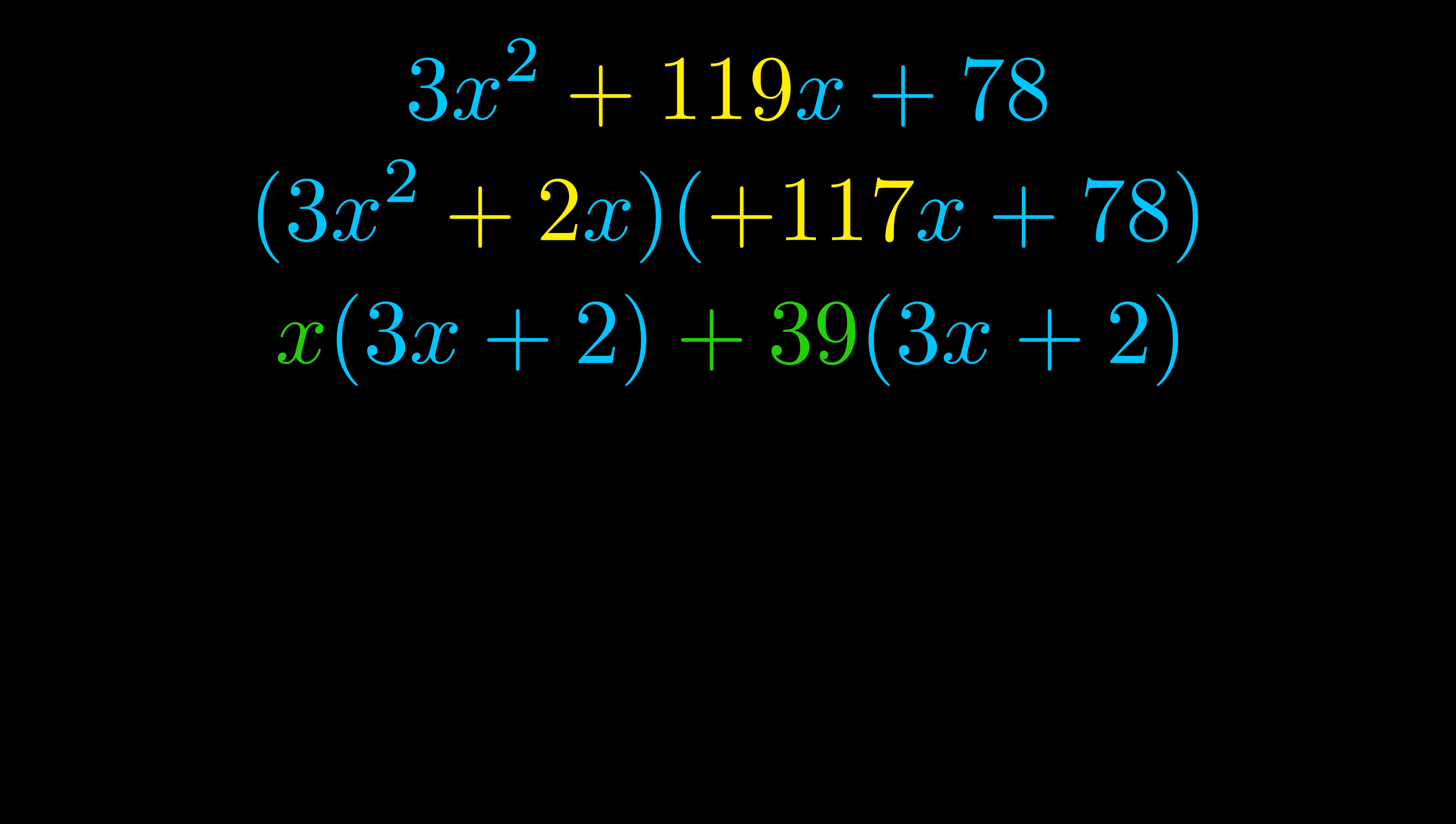Notice also how what remains inside of the parentheses is the same in both cases. The blue values are the same. Those blue values will become one of our factors and we will combine the two green values the GCFs that we pulled out to get the other one. And that is our fully factored equation.